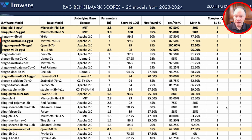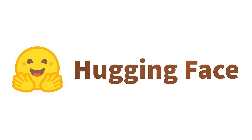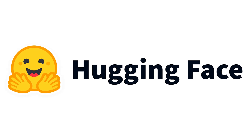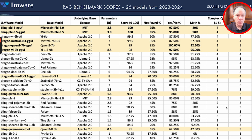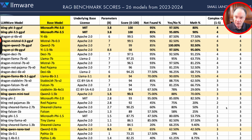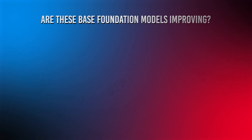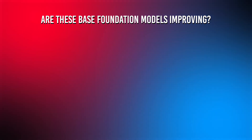Just to ground you to what we're looking at here: far left, that is the LLMware model — that is our fine-tuned version. Every single one of these models is available in our Hugging Face repositories. You can use it in LLMware and touch and experiment with the model yourself. The model just to its left is the base model — the foundation model that we fine-tuned. That's where we're going to look to draw takeaways: are these base foundation models improving?